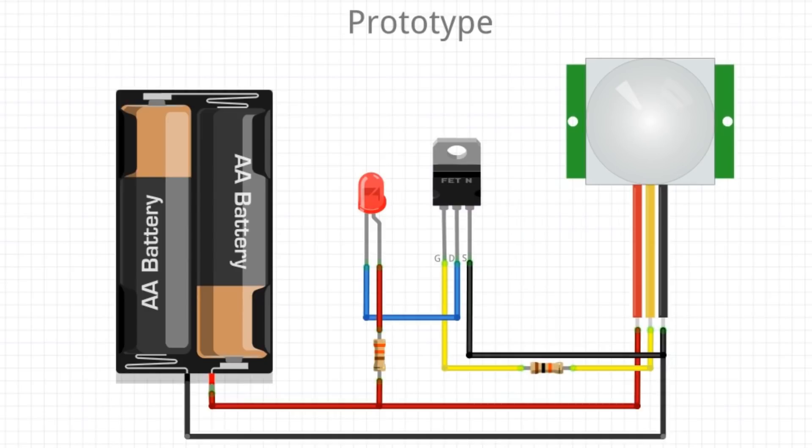Now we have the voltage tied to the positive pin of the LED and the negative end of the pin goes to the transistor which opens and closes it to ground, turning it on and off. Now that was the prototype, let's look at the final schematic.